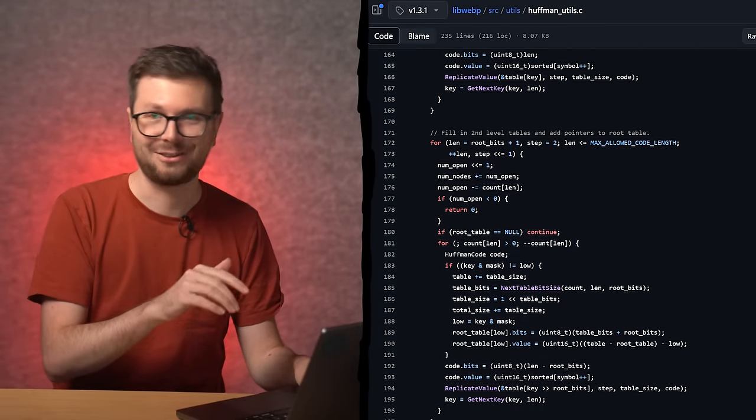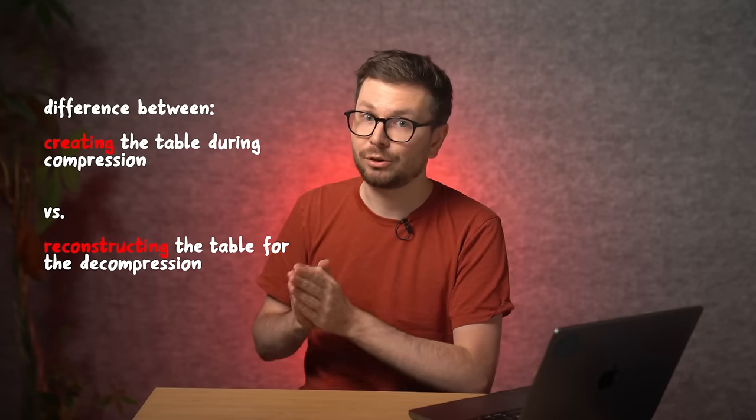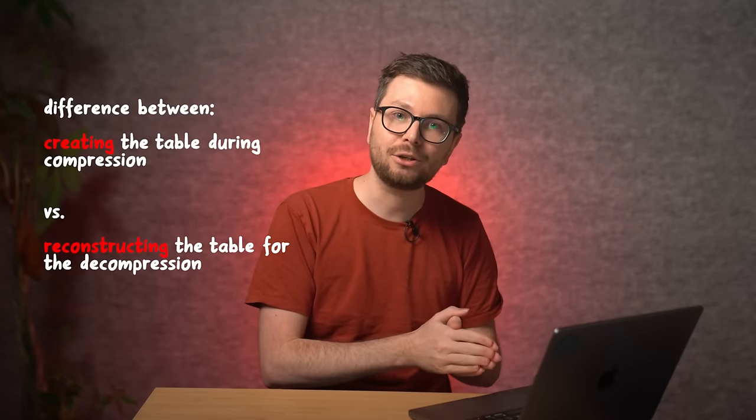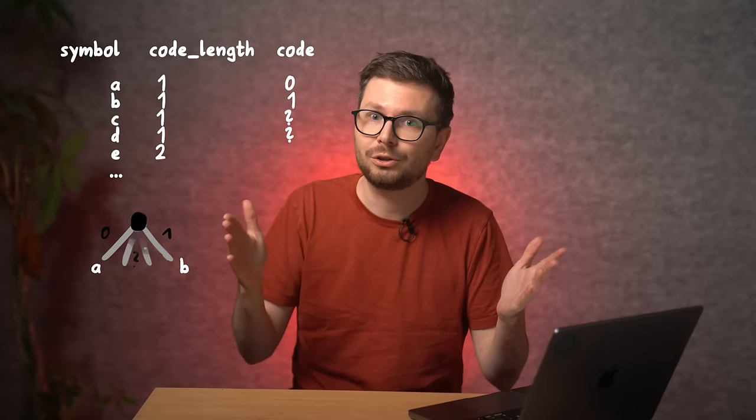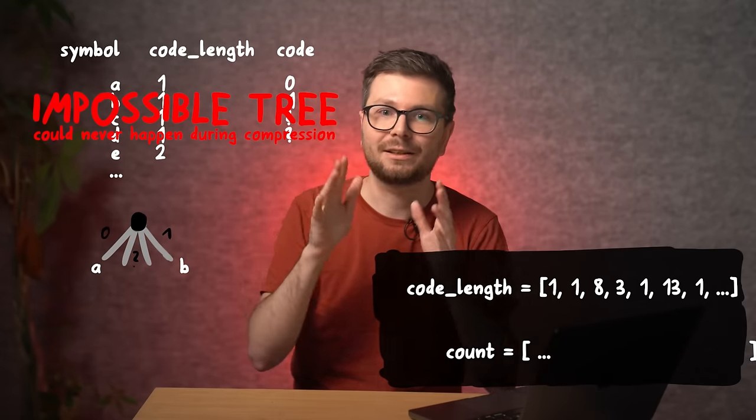And now pay attention, because here comes the mental aha moment for me. I don't think it's obvious at first, but after spending countless hours trying to understand this, I realized something. There is a huge difference between creating this table or array during compression, and now creating it again during decompression. Hold my mate, let me show you. Let's imagine an invalid table where 4 symbols have a bit length 1. The tree representation of that makes no sense. You have 1 bit 0 and 1, you could encode 2 symbols, but you cannot do the other 2. Obviously such a tree does not exist, right? But in the code length array, in the webp file, we could encode that.